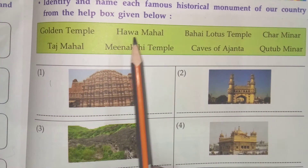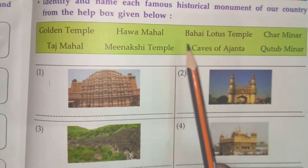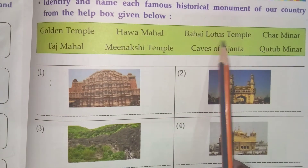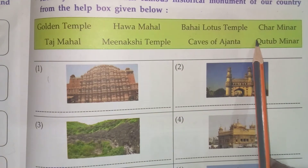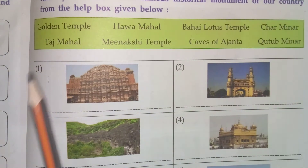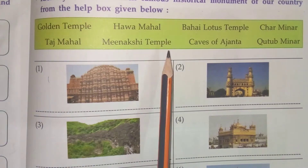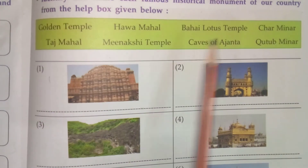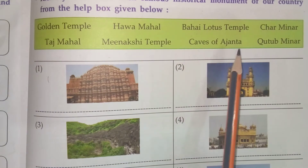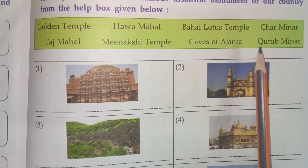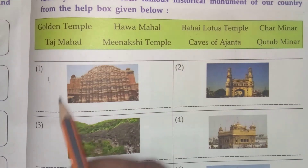The help box contains: Golden Temple, Hawa Mahal, Bahai Lotus Temple, Charminar, Taj Mahal, Meenakshi Temple, Caves of Ajanta, Qutub Minar.